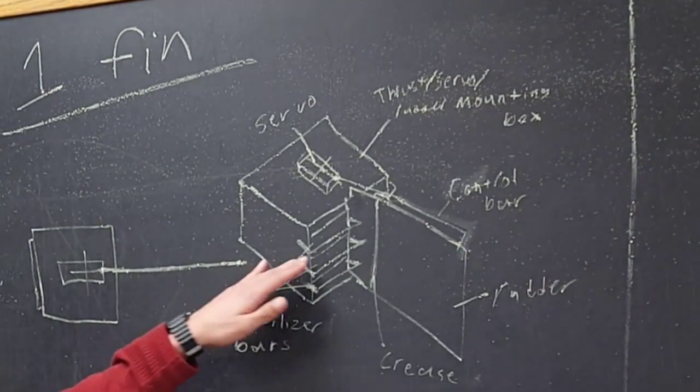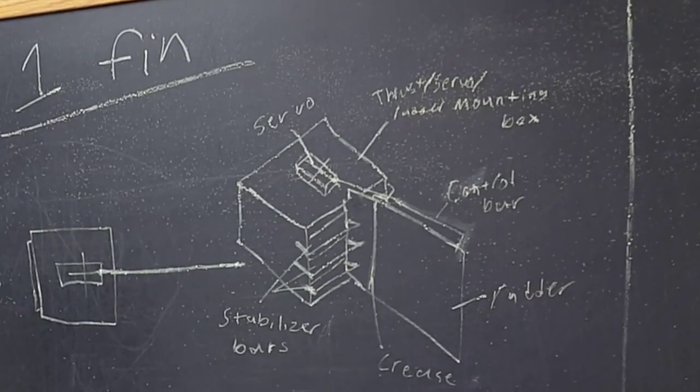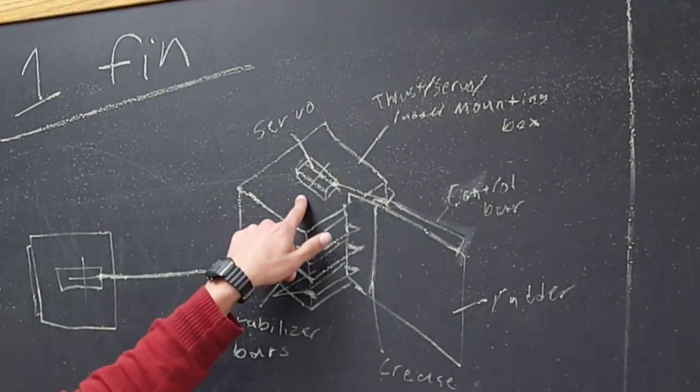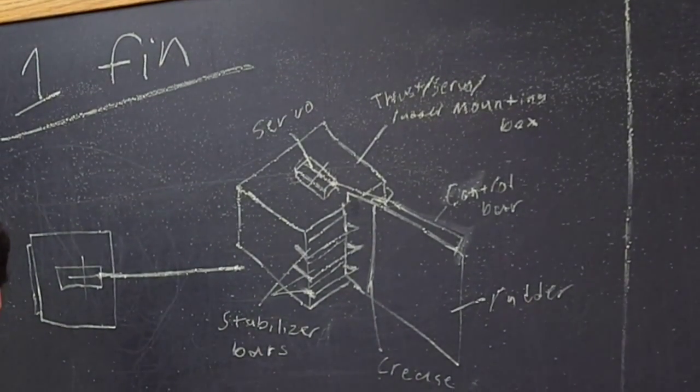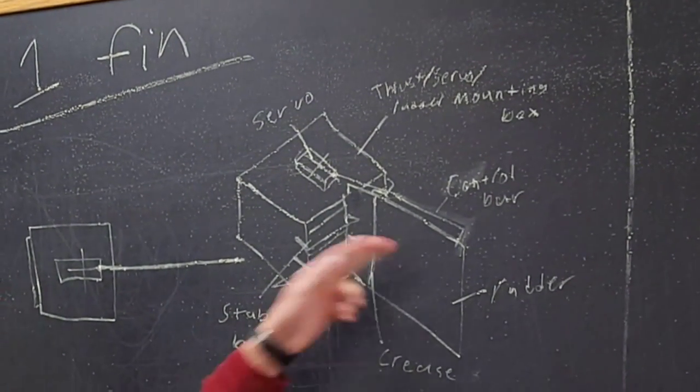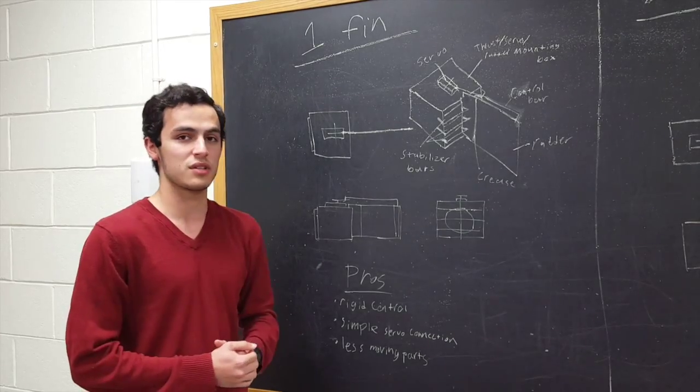It uses horizontal stabilizing bars to help house our one rudder in the center of the steering box, and that is controlled via a servo that is mounted at the top and a rigid metal control bar, which is essentially like a thin wire hanger bar that attaches to the back of the rudder and from the servo, allowing it to steer when the servo rotates.